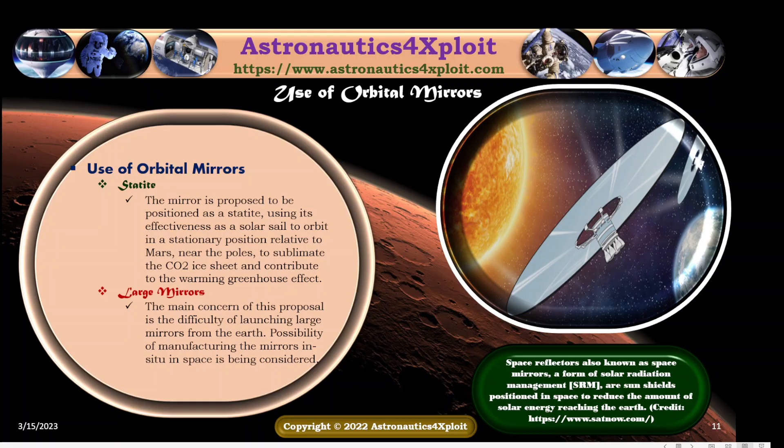The mirror is proposed to be positioned as a statite, using its effectiveness as a solar sail, to orbit in a stationary position relative to Mars near the poles, to sublimate the carbon dioxide ice sheet and contribute to the warming greenhouse effect. The main concern of this proposal is the difficulty of launching large mirrors from the Earth. The possibility of manufacturing the mirrors in situ in space is being considered. The picture here shows a space reflector.